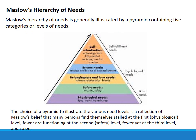We are going to start off with Maslow. Maslow is one of our more famous people who studied motivation, and his hierarchy of needs is generally illustrated by a pyramid containing five categories or levels of needs. We are going to start at the bottom, which is purple — physiological needs. This is our food, our water, our warmth, and our sleep.